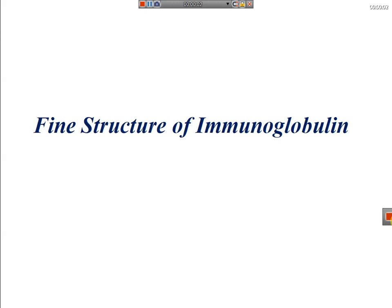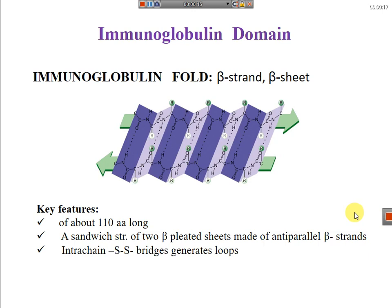Hello viewers. In this video we will try to understand the structure of immunoglobulin a bit further — we will delve into the fine structure of immunoglobulin. By now you know that immunoglobulins are made up of immunoglobulin domains; both light chain and heavy chain have immunoglobulin domains in their variable region as well as constant region.